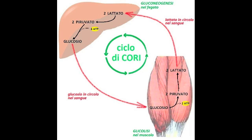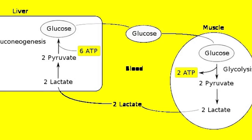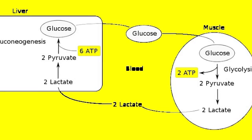As you can see, the six ATP molecules are used at the expense of the liver. The liver gives its energy to form glucose, which is then released again into the bloodstream to go back to the muscles, which can use it for another glycolytic cycle.